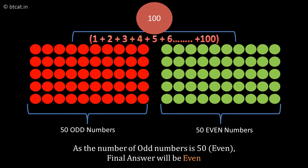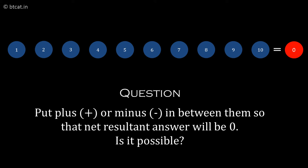Here's another question: if there are 10 numbers written on the board—1, 2, 3, 4, 5, 6, 7, 8, 9, 10—can you put plus or minus signs between them so that the net answer is zero? Is it possible?